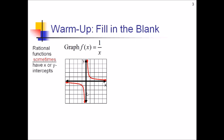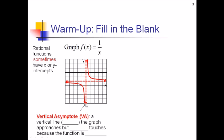Now one thing that most rational functions have, kind of hidden on this graph because the y and x axes are in the way — if we were to remove those axes, we would see these nice little dashed guidelines called asymptotes. There are two types of asymptotes in this graph. One of these, the vertical asymptote, or VA for short, is a vertical line — in other words an x value — that the graph is approaching but never touches. The reason it never touches: if you look at the x value zero, you're going to have one over zero, so the function is undefined at that x value.